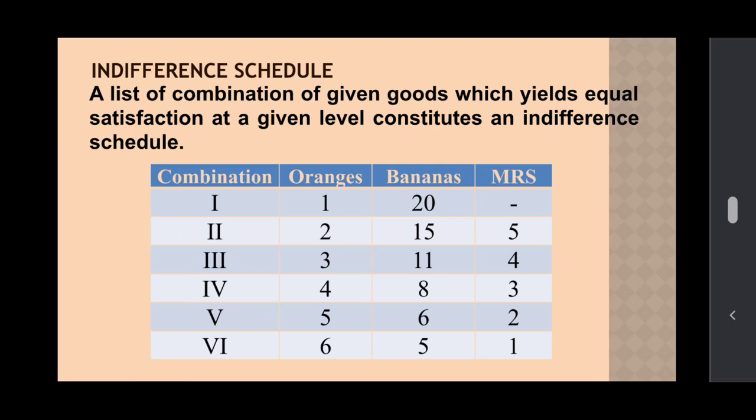Column one shows combinations of two goods — first, second, third, fourth. Columns two and three show the two goods. In our example, the two goods are oranges and bananas, and every combination — first, second, third, fourth, fifth, sixth — gives the same level of, gives equal satisfaction to the consumer.